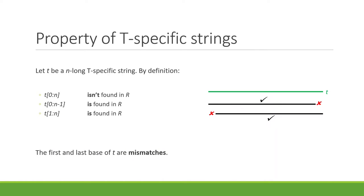Before describing the algorithm, let me introduce this property. Let s be an n-long t-specific string. By definition, the entire string cannot be found in r, but its (n-1)-long prefix and its (n-1)-long suffix can be found in r, since we are looking for the shortest t-specific string. In other words, the first and the last base of a t-specific string are mismatches with respect to the set r.